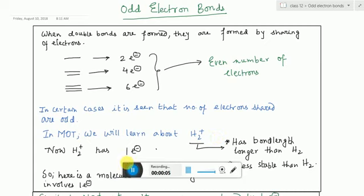Hello guys, today we will be studying about odd electron bonds. This part is a little bit tricky, and very often people face problems with this topic. Odd electron bonds basically come after we learn the octet rule, and these are certain kinds of bonds which don't follow the octet rule. There are many other forms which don't follow the octet rule, like incomplete octet and all.